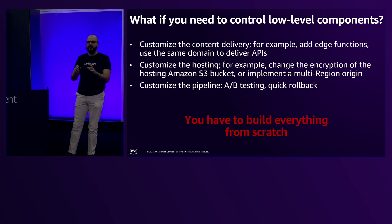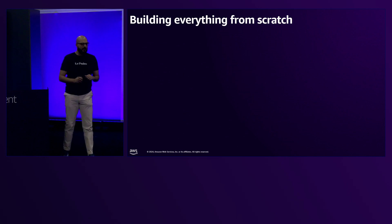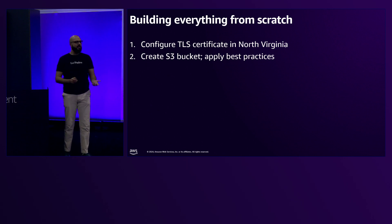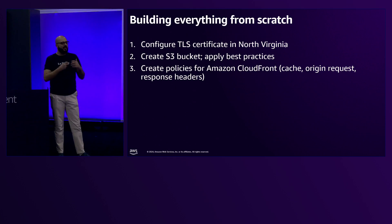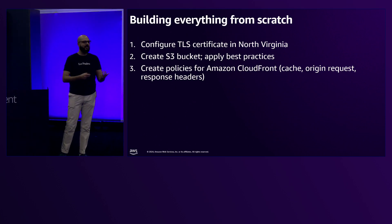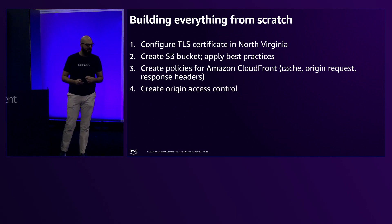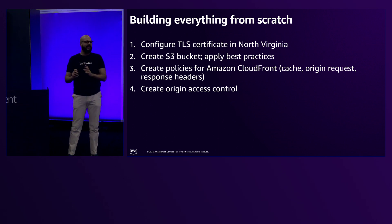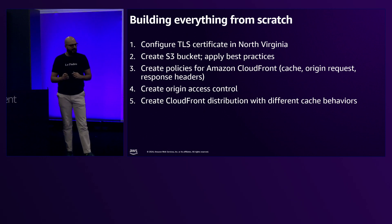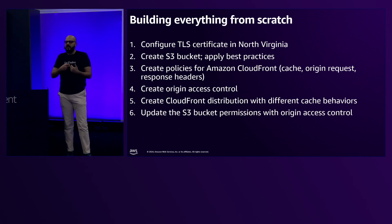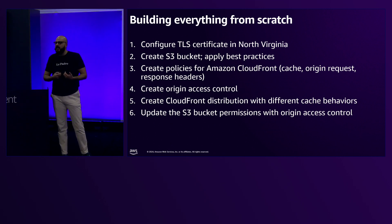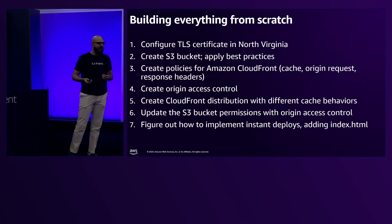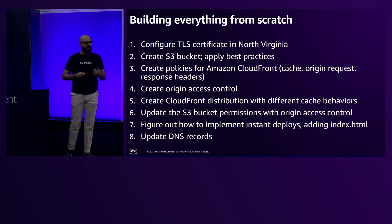Let's zoom in on the complexity of setting up CloudFront and S3. First, you need to configure a TLS certificate in North Virginia. Then you create the S3 bucket and apply best practices. Then you need to create policies for CloudFront — the cache policy, the security headers to send to users — and create an origin access control to ensure requests to S3 go exclusively through CloudFront. Then you create the CloudFront distribution, add permissions to the S3 bucket, figure out how to add index.html, and finally change the DNS records. That's a lot of steps.